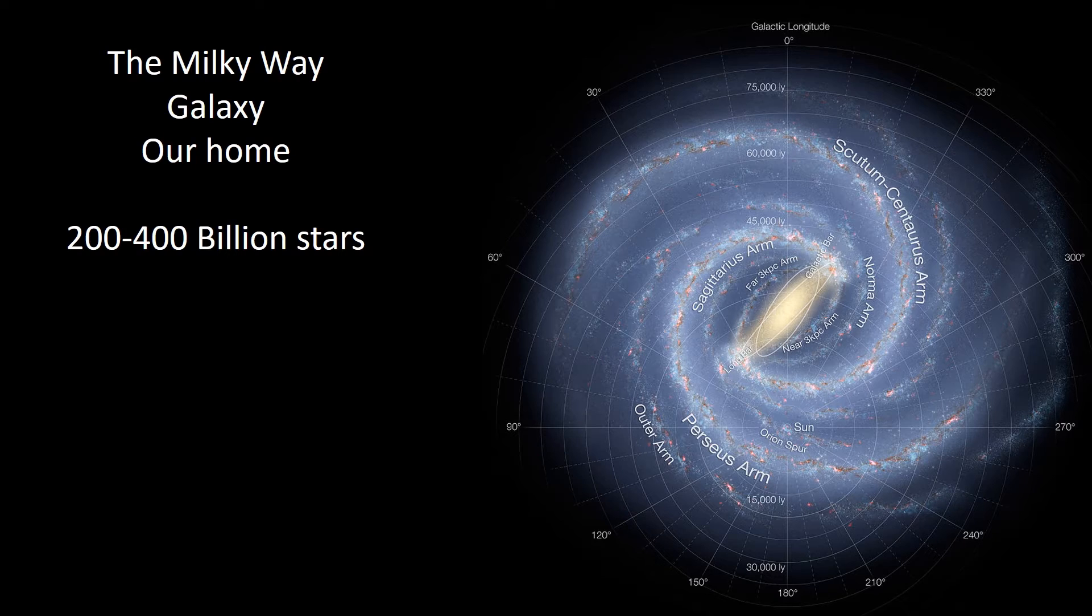That's fast enough to go around the Earth seven times in one second. Now to also give you some example of how big our galaxy is, imagine that our entire solar system from the sun all the way out to Neptune was the size of a nickel. If that's the size of our own solar system, then our galaxy would be the size of the United States.